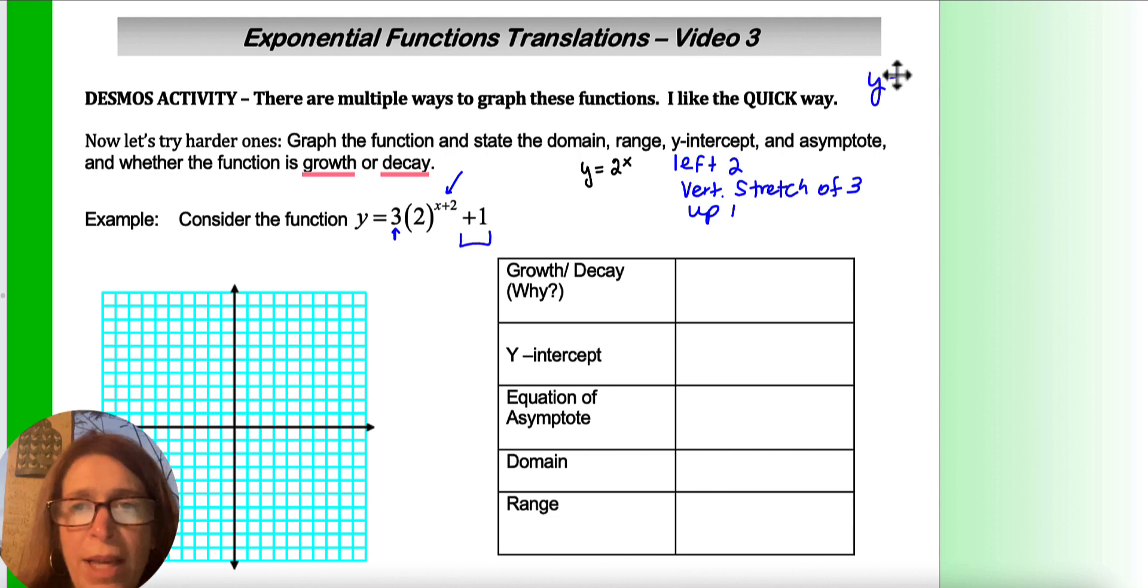Think of it like this. This is of the form y equals a, b to the x minus h, plus k. So it's always going to be the opposite on the inside, so the inside is going to be up in that exponent, and this is going to be on the outside, moving it up and down.